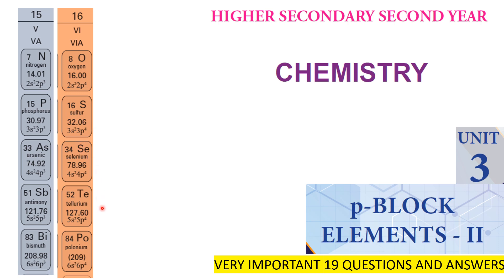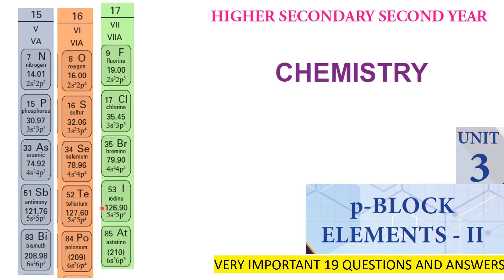Halogen group, 17th group, general electronic configuration NS2 NP5. Fluorine: 2S2 2P5, Chlorine: 3S2 3P5, Bromine: 4S2 4P5, Iodine: 5S2 5P5, Astatine: 6S2 6P5.